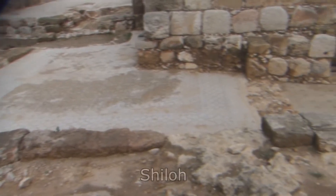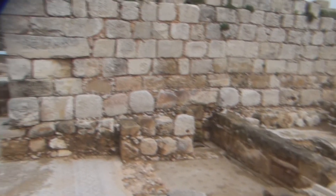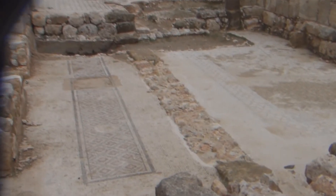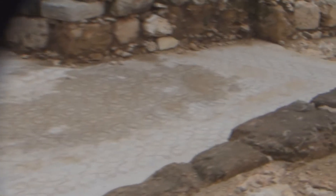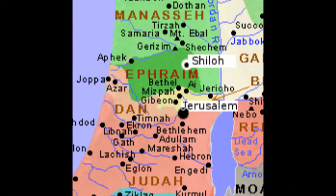One thing that's found here is Byzantine remains. You see these mosaic floors, and this building you see is a later building, but there was a church here. This is important because an inscription was found here from the Byzantine period that names the site Shiloh. That means that in the 4th and 5th century AD, this site was understood to be Shiloh, and that's why the church is here commemorating the place.